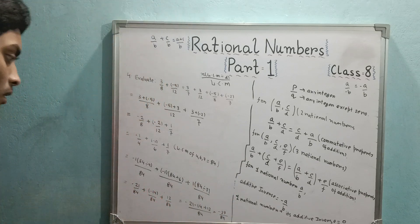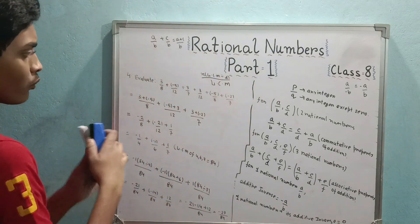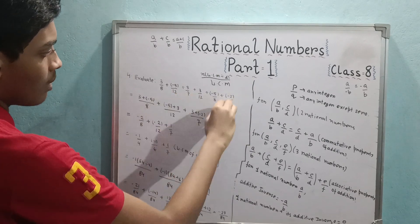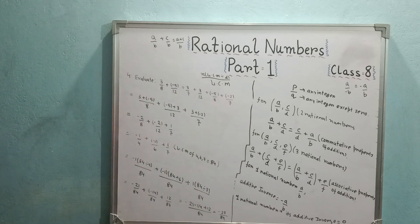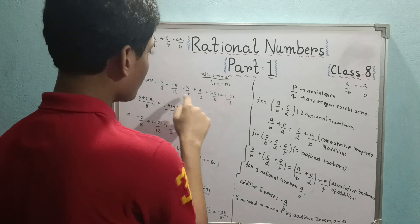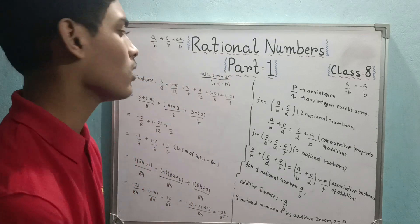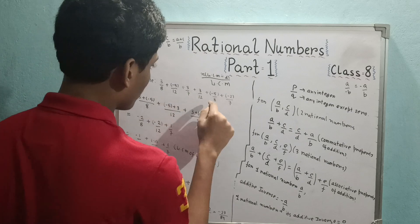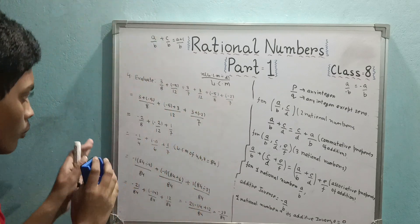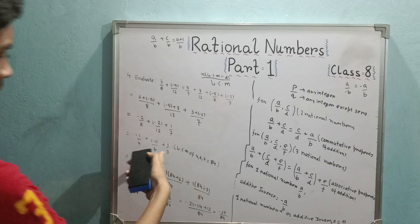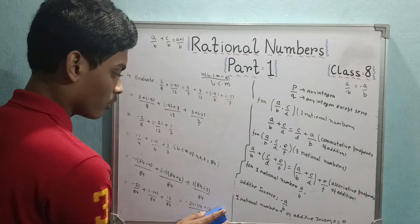Always try to squeeze the problem. If common denominators are there, add up their numerators — it becomes much more manageable. Then it is easier to get the LCM of just those smaller numbers. This approach saves a lot of time compared to running after the whole huge question at once.